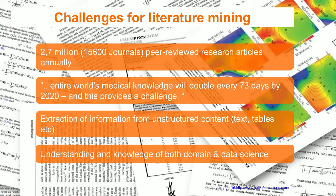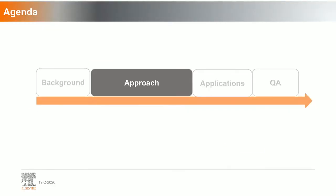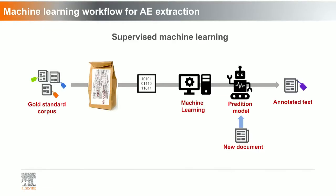Extraction of information is also challenging when done automatically, because most of the time the content is unstructured — with text, tables, and images. You need both domain knowledge and data science knowledge in order to extract relevant information from the literature. Next, I will show you how we are actually extracting this information.